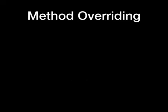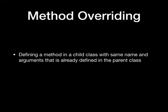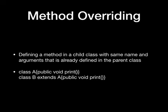Method overriding is defining a method in a child class that is already defined in the parent class, with the same method signature — same name, arguments, and return type. For example,